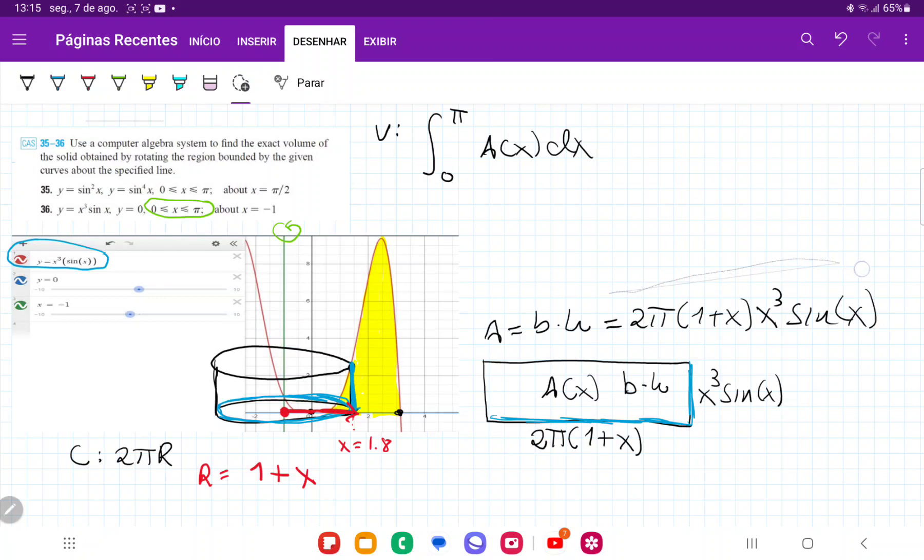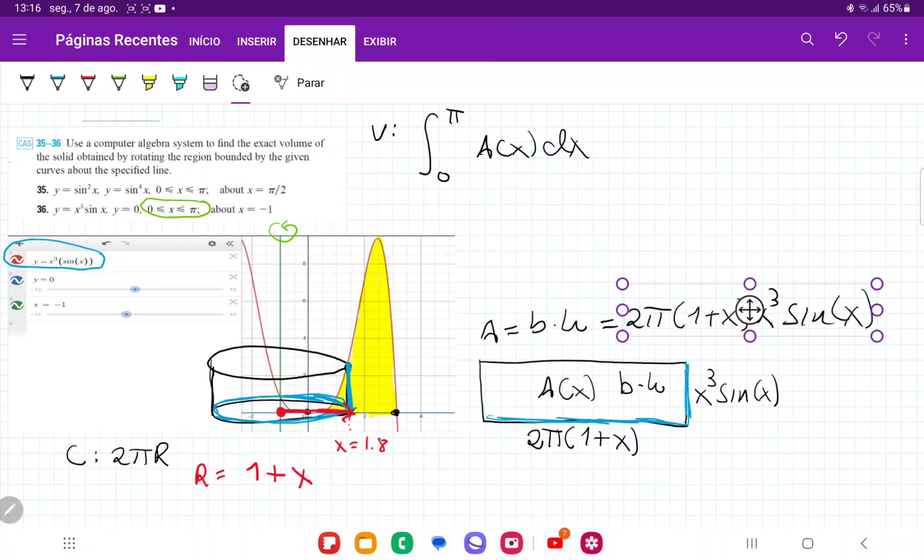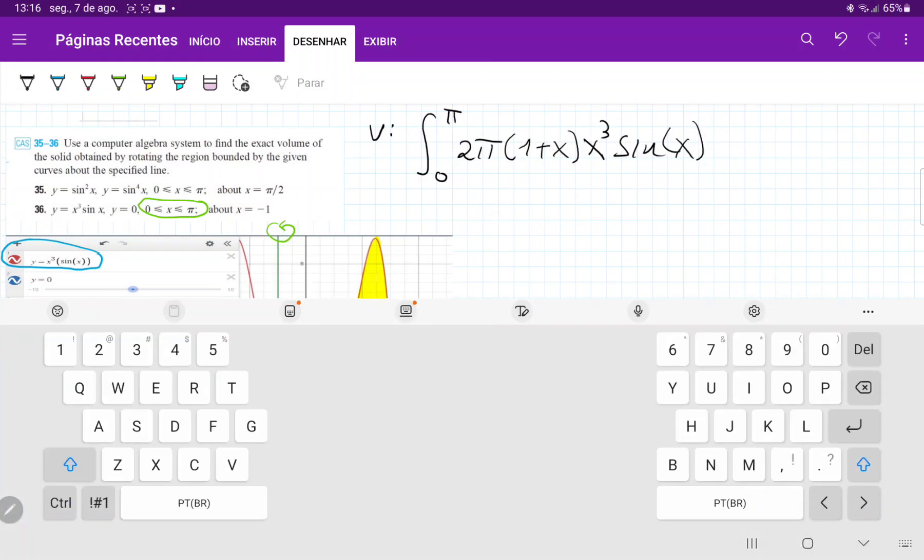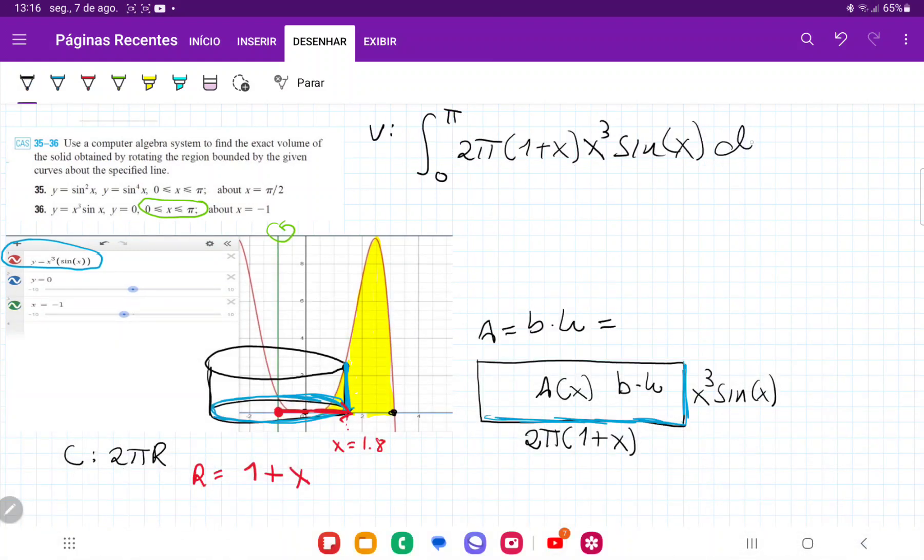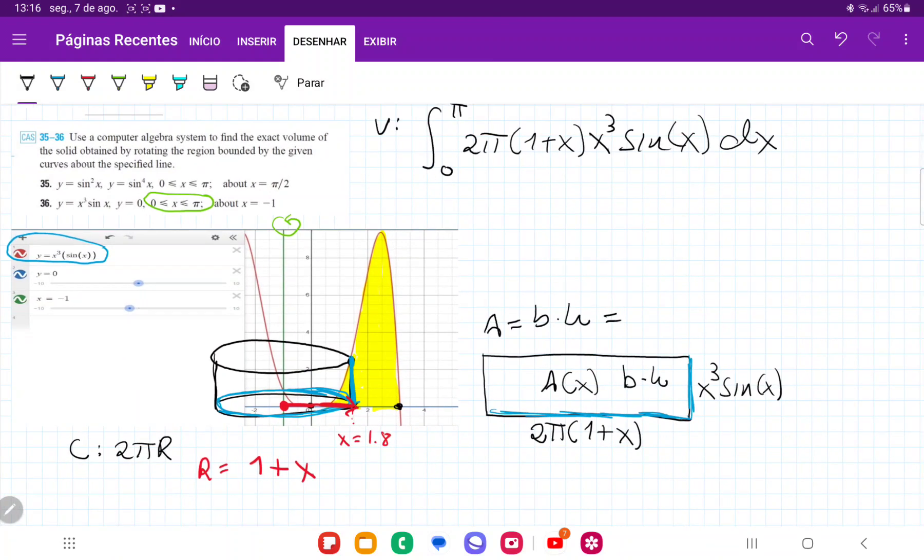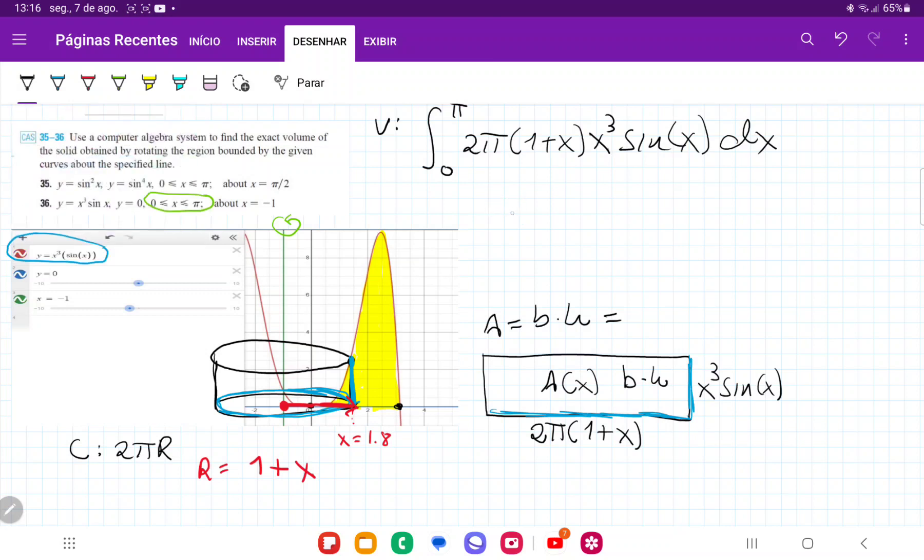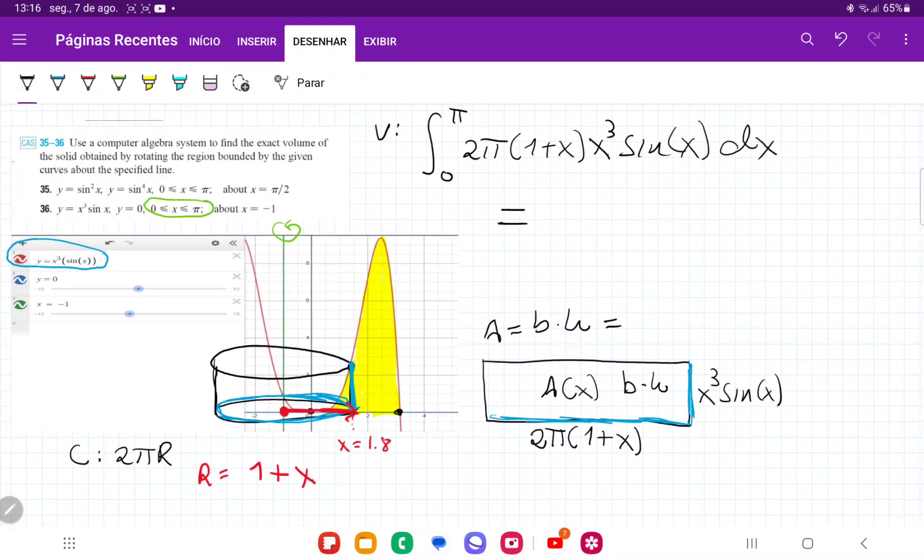So all I have to do is sum up all these areas. And so I'm going to replace it in my integral. I'm going to move that here. And then there is a little dx at the end. And now it wants us to use a computer algebra system to solve it. We don't have to integrate this ourselves. So I'm using the online integral calculator called Symbolab.